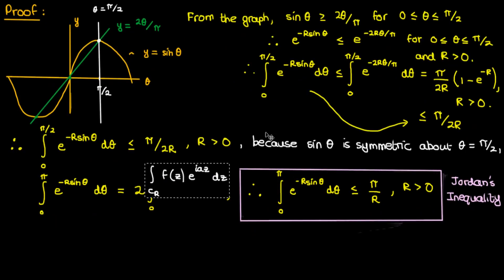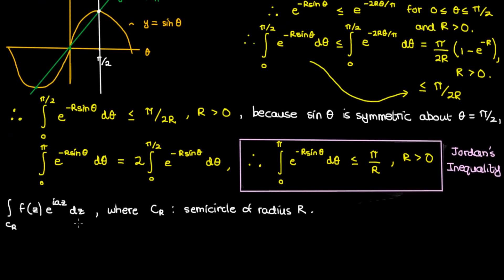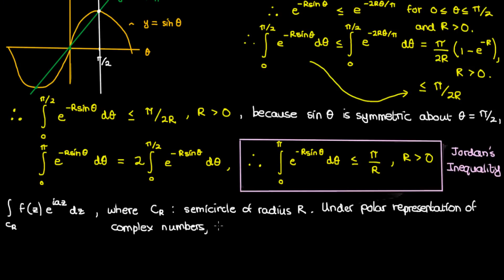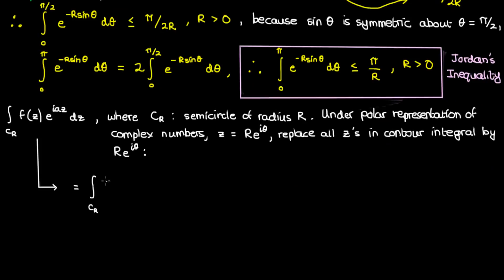Let's continue the proof of Jordan's lemma. We'll start by taking the integral that we ultimately want to prove, which is the integral over C_R of f(z) times the exponential of iaz, where C_R is a semicircle on the upper half of the complex plane with radius capital R. Since we're integrating f(z) over a semicircular arc, we can convert this contour integral into an integral over an interval by using the polar representation of complex numbers. Since the radius of the semicircle is constant, we write z as R·e^(iθ) and replace all z's in the contour integral accordingly, giving us the integral on the right.